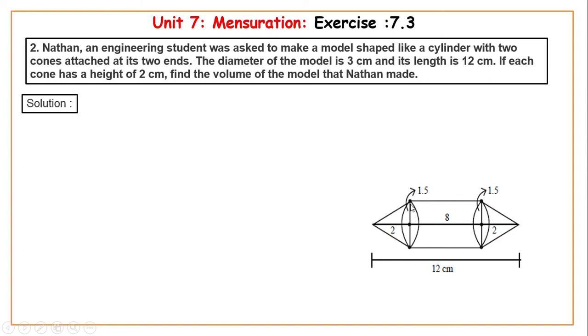If you are finding the volume, then you can see the diameter of the model. The diameter is 3 centimeters, so the radius is 1.5 centimeters. Same here, 1.5 centimeters. And total length is 12 centimeters, so the diameter is divided by 2. The height of the cone is 2 centimeters each.